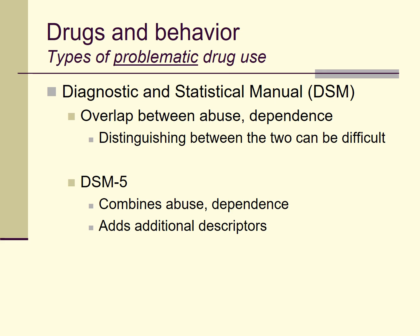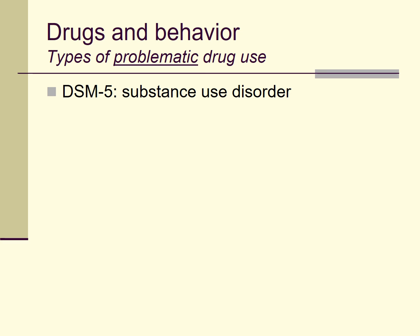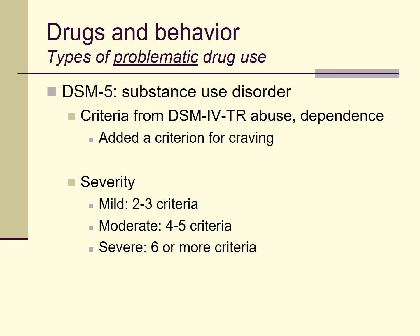In DSM-V, they added a criterion for craving, and added a way of classifying how mild, moderate, or severe the problem is. Nowadays most psychiatrists, psychologists, physicians, and nurses would diagnose a condition called substance use disorder, adding additional information to characterize how severe that disorder is — information that includes criteria for both drug abuse and drug dependence. The key point is that problematic patterns of drug use are understood in terms of impairment, distress, disability, and loss of control over one's own drug use.